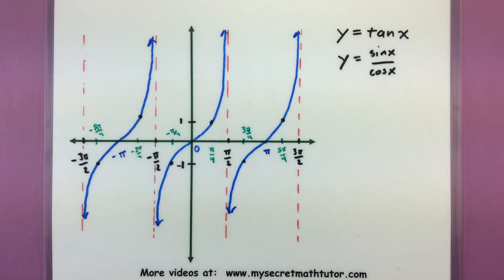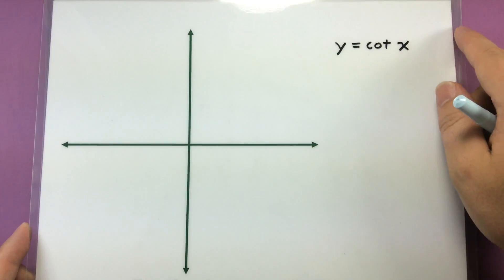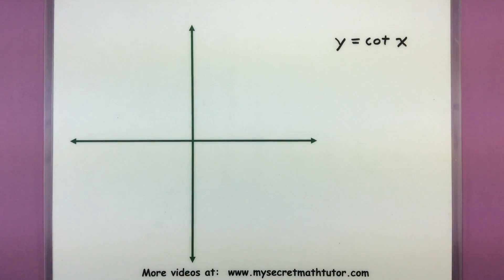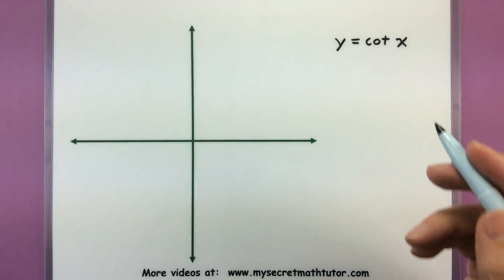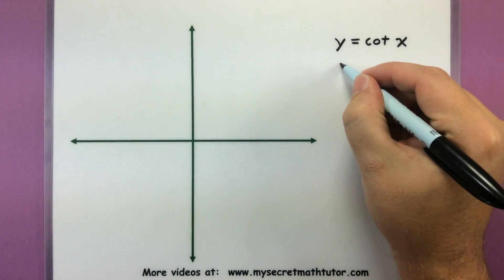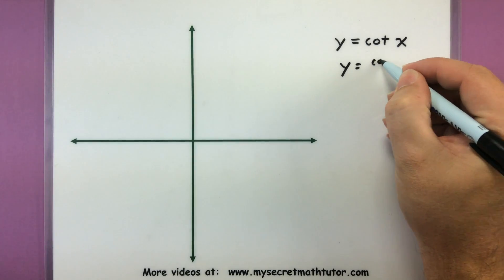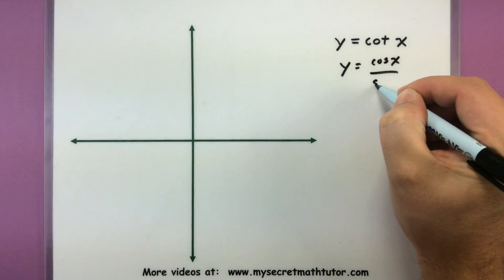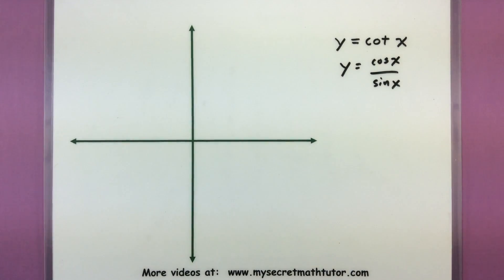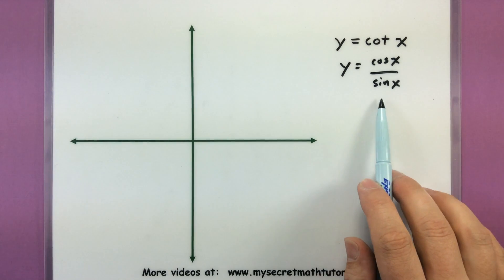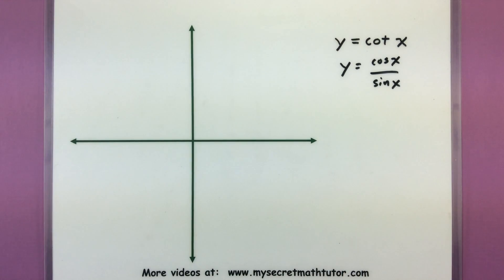Let's move on and do the same building process for cotangent. Cotangent can be built in a very similar way. You'd first recognize that cotangent is really cosine over sine. So we're going to put our asymptotes everywhere that the bottom is equal to zero — that is, everywhere where sine is equal to zero.